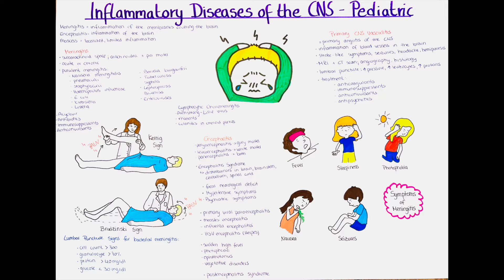Meningitis in children is the inflammation of the membranes covering the brain. It develops usually in the subarachnoid space and affects the soft membranes — the pia mater and arachnoidea — which together make up the leptomeninges. The dura mater, the outer membrane, is usually not inflamed. 70% of cases occur in children below the age of five, and the incidence is highest in the first two years of life. It is one of the most common pediatric inflammatory diseases in non-industrialized countries.